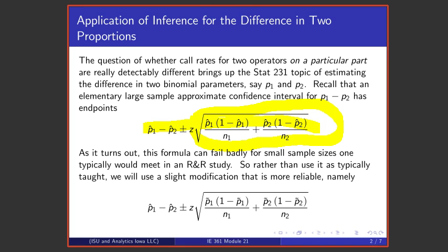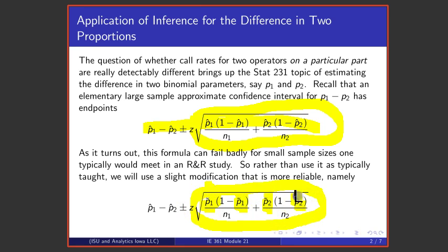So instead of using that, what we're going to use in this module is a modification of it that basically changes only what's underneath that square root. It does so by replacing p1 and p2 with what we're going to call p-tilde 1 and p-tilde 2 — only for purposes of changing the size of the square root to make the interval a bit longer and thereby give it appropriate coverage, so that 90% intervals are truly 90% intervals.